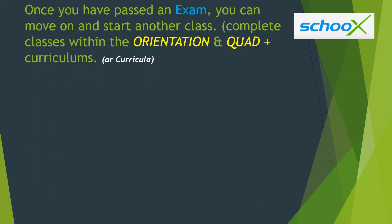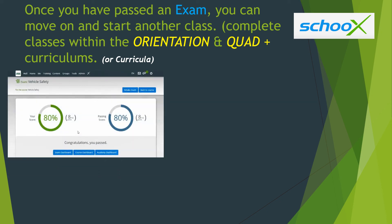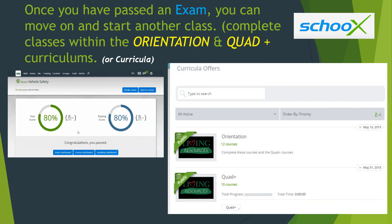Once you've passed an exam you can move on and start another class. Remember to complete classes within the orientation and Quad Plus curriculums. When you pass an exam you'll receive feedback showing your score - you'll also receive feedback if you do not pass. In this example a person scored 80 percent, which is considered passing. There are 12 classes within the orientation curriculum and 10 classes within the Quad Plus curriculum.